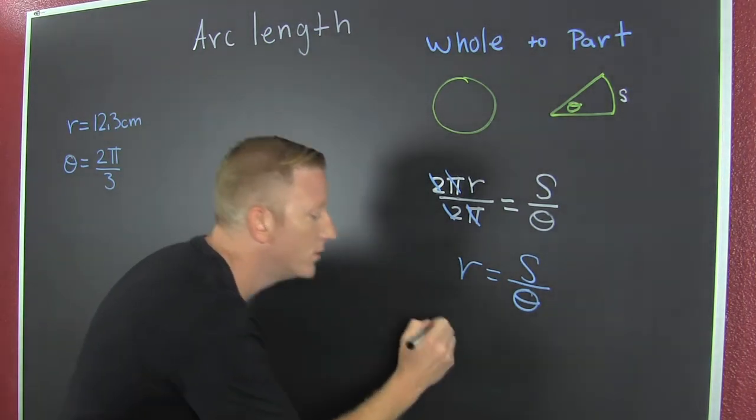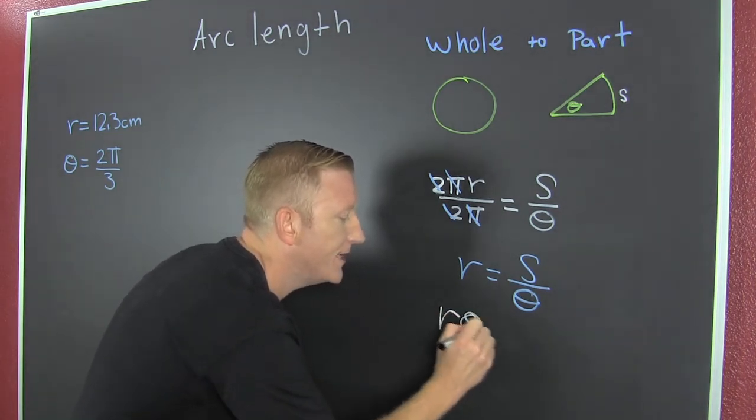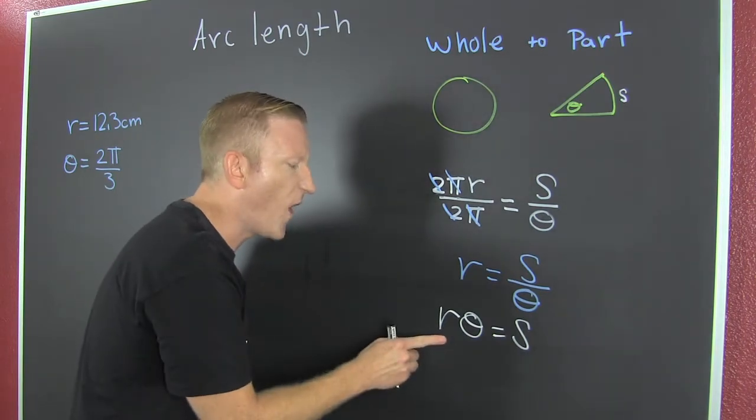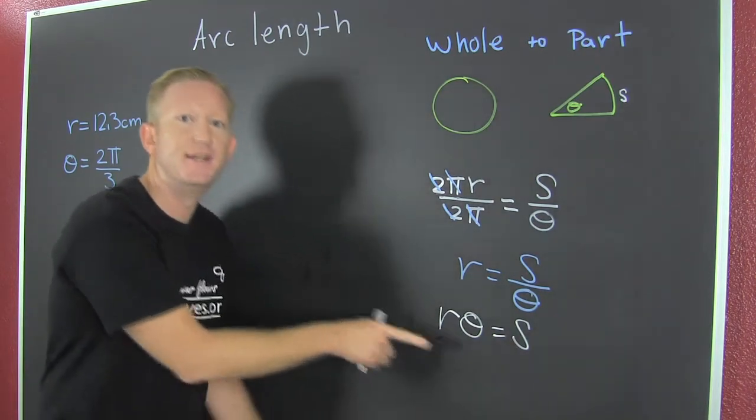Like Jedi, right? Woo. So we have R theta is equal to S. Yes. It's like Ross. It's like a boss.